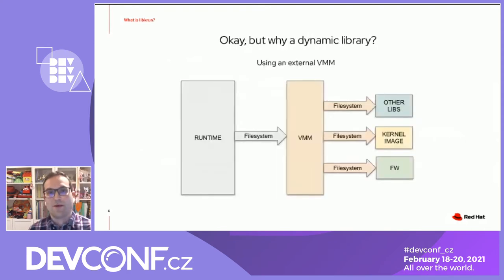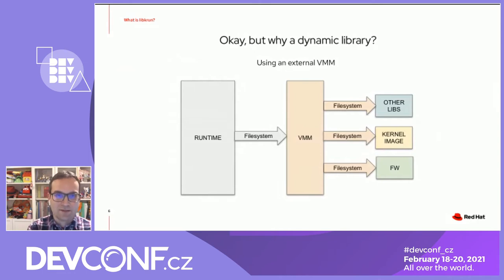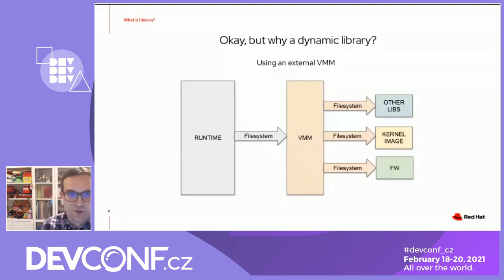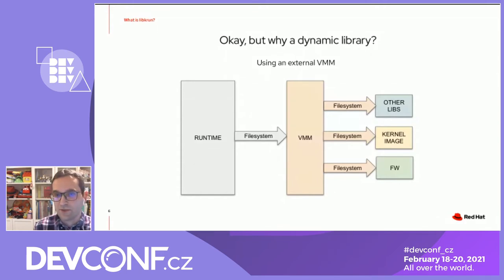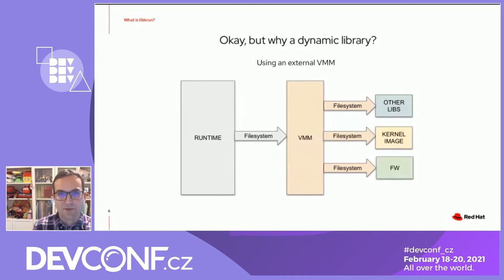Some of you may be wondering why this is a dynamic library — why have all these features as a dynamic library. To explain this, let me first introduce what would be needed if you had a runtime and you wanted to create a VM using an external virtual machine monitor. Your runtime would need to locate the executable of that virtual machine monitor through the file system, and the virtual machine monitor itself would need to locate its own dependencies — possibly other libraries, a kernel image, possibly some firmware — everything through the file system.